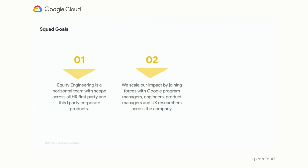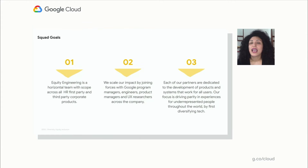Secondly, we want to scale our impact by joining forces — we want everyone at the table. We want to make sure that Google program managers, engineers, product managers, and UX researchers across the company have an opportunity to advance these goals internally first and then more broadly throughout the industry and throughout the world. We also make sure that each of our partners is dedicated to the development of products and systems that work for our users, especially our most vulnerable users.